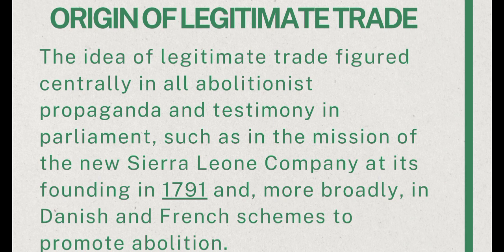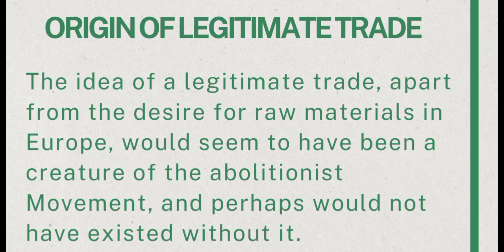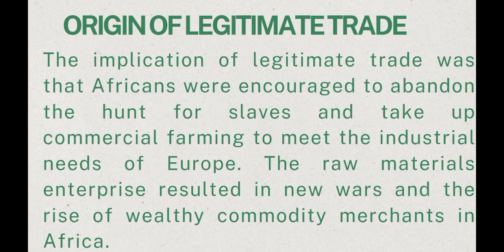After the abolition of slave trade by Britain in 1807, African evangelicals organized the African Institution with the aim of encouraging staple crop production in Sierra Leone. The idea of legitimate trade, apart from the desire for raw materials in Europe, would seem to have been a creature of the abolitionist movement and perhaps would not have existed without it. The implication was that Africans were encouraged to abandon the hunt for slaves and take up commercial farming to meet the industrial needs of Europe. The raw materials enterprise resulted in new wars and the rise of wealthy commodity merchants in Africa.